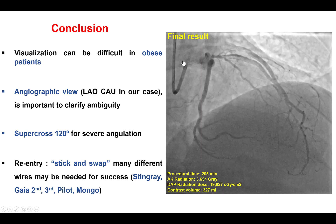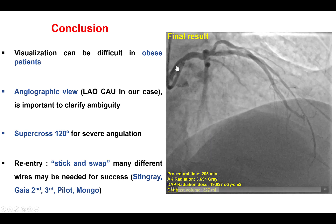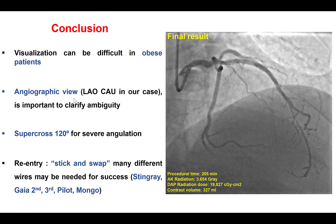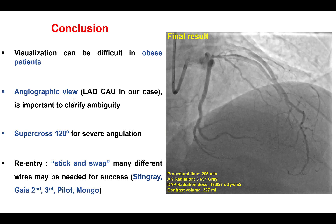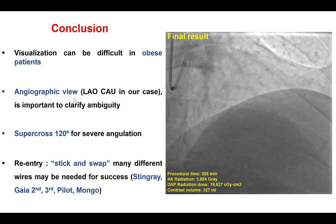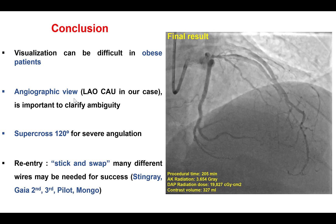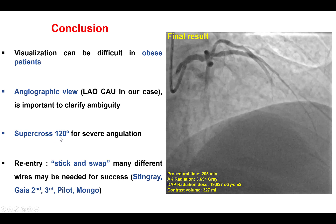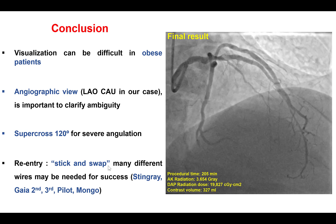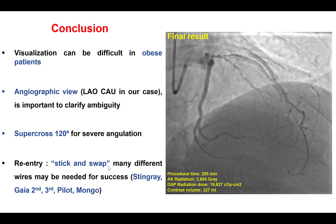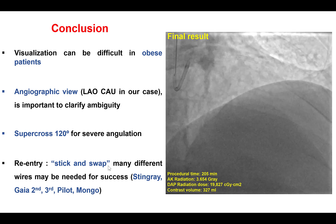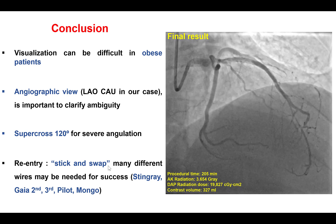Several lessons from this case: First, visualization can be challenging in morbidly obese patients, requiring high radiation doses. Second, to clarify proximal cap ambiguity, simple techniques such as using different angiographic views are valuable — the spider view was critical for better understanding the origin of the LAD. It is also important to protect side branches when there is an ostial lesion at the takeoff of major branches. We used an angulated microcatheter, the Supercross 120, to advance the guide wire into the LAD. Finally, we used essentially a triple-blind stick and swap technique using the Stingray balloon, performing blind sticks on both exit ports, followed by a polymer-jacketed Mongo guide wire to gain access to the distal true lumen. Thank you.